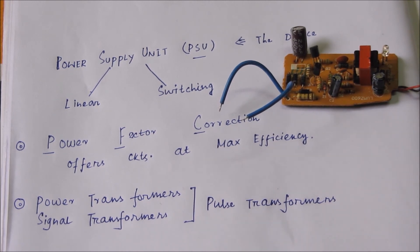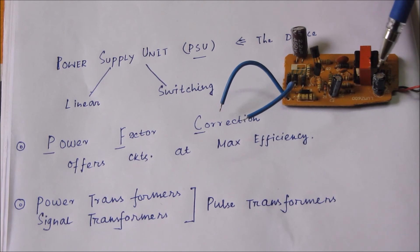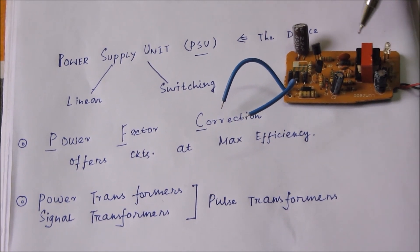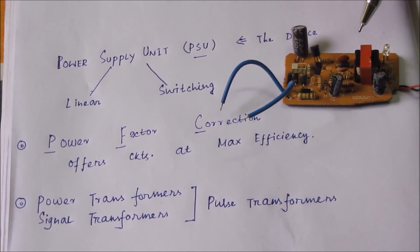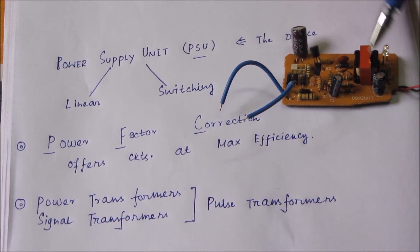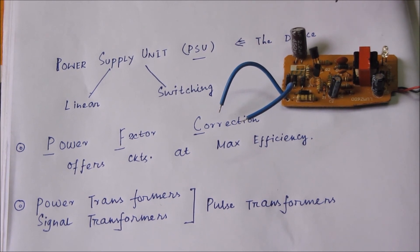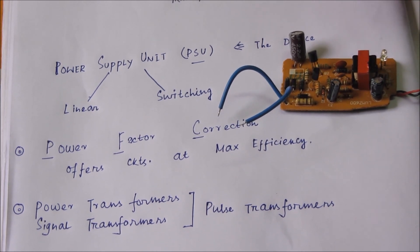The transformer in this circuit is called a pulse transformer. Pulse transformers can be divided into two different categories: a signal transformer and a power transformer. This particular one is a power pulse transformer.